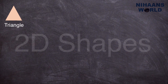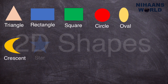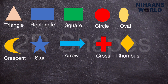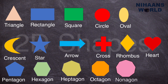2D shapes recap: triangle, rectangle, square, circle, oval, crescent, star, arrow, cross, rhombus, heart, pentagon, hexagon, heptagon, octagon, nonagon, decagon.